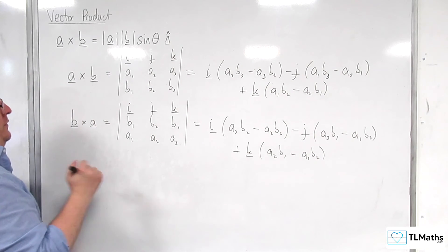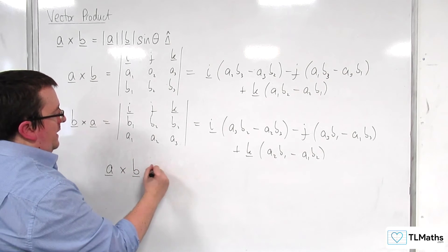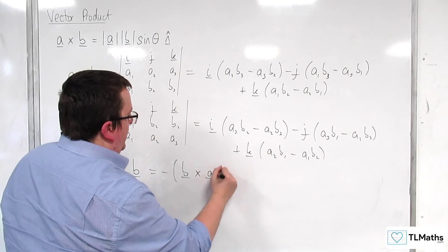So the consequence is that we can see that A cross B is equal to minus B cross A.